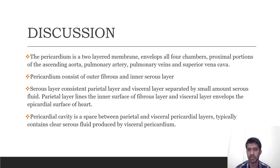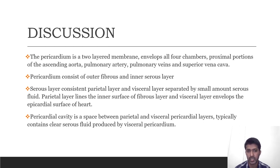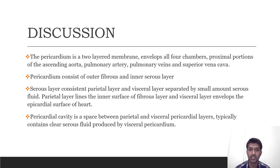The pericardium is a two-layered membrane enclosing the four heart chambers, proximal ascending aorta, pulmonary artery, pulmonary veins and superior vena cava. It consists of an outer fibrous and inner serous layer. The serous layer comprises parietal and visceral layers separated by a small amount of serous fluid. The parietal layer lines the inner surface of the fibrous layer and the visceral layer covers the surface of the heart. The pericardial cavity is the space between these layers and typically contains clear serous fluid produced by the visceral pericardium.